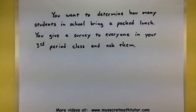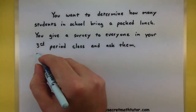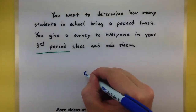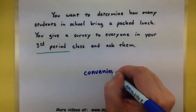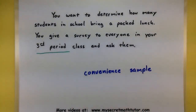In this next example, you want to determine how many students in a school bring a packed lunch. You're going to give a survey to everyone in your third period class and simply ask them. Notice how you're not necessarily asking all students — instead you're asking just the ones in your third period class, maybe because it's the easiest way to do it. This is an example of a convenient sample — the easiest type because you're really just asking people who are easy to get a hold of.